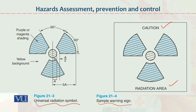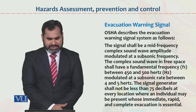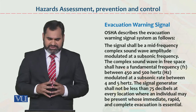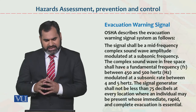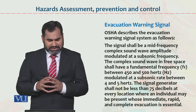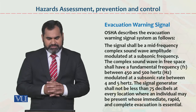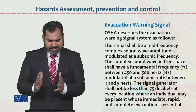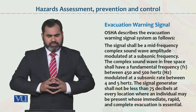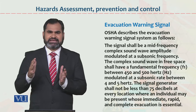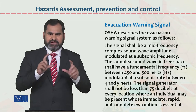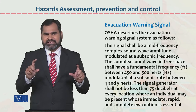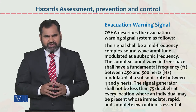These two symbols are basically our guidelines, so that we can know when an employee has entered a restricted area and entry should be restricted. Regarding evacuation and warning signals: the Occupational Safety and Health Association describes the evacuation warning signal system as requiring a mid-frequency complex sound wave. We have to consider specific frequency, average frequency, and highest frequency.